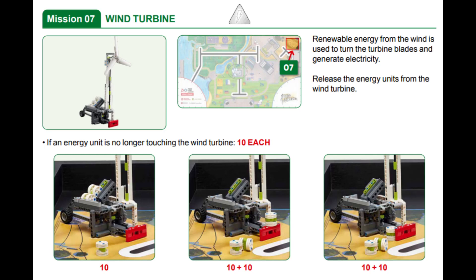For this mission, points are awarded for each energy unit that is no longer touching the turbine at the end of the match. This is the mission where you can most easily score 30 points, but it's also very tricky because sometimes the energy units get stuck in the model, or the energy units can roll back towards the wind turbine causing you to not get points because they need to not touch the turbine at all in order to score.